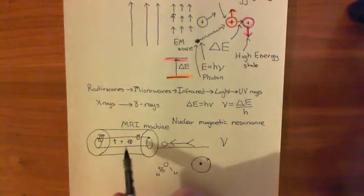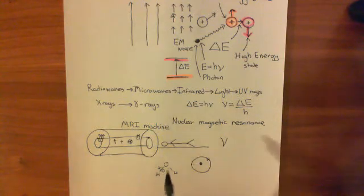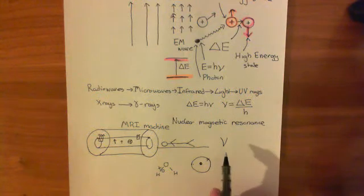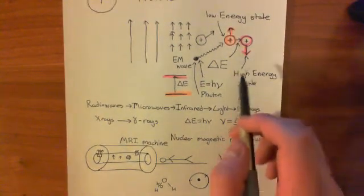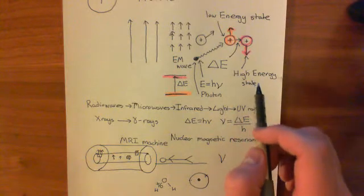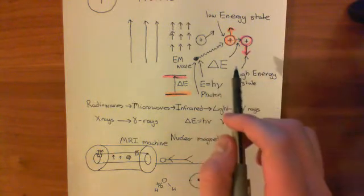So protons in that box will move from the low energy state to the high energy state. Then, when you turn off the radiation, what happens is that those protons that were now disaligned and in the high energy state, they have to give up their energy now.